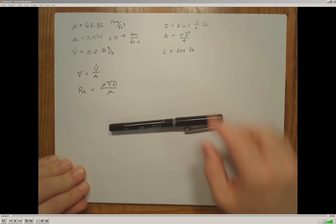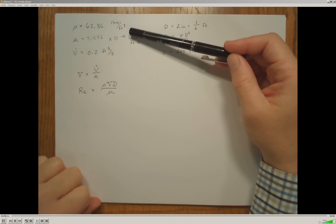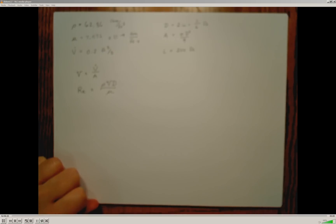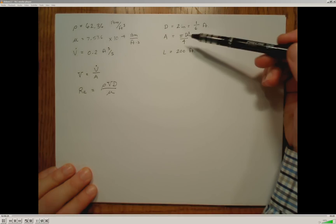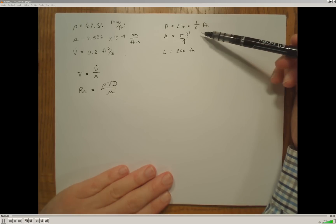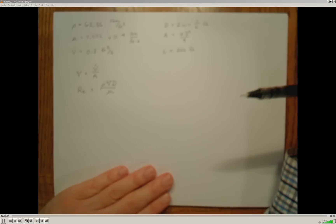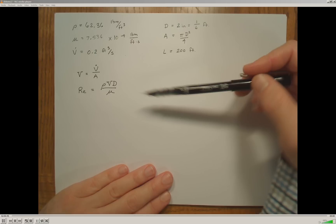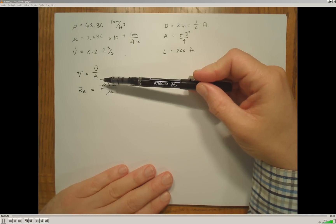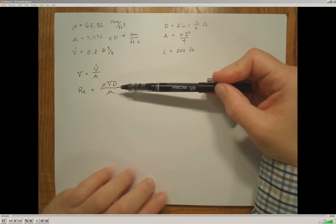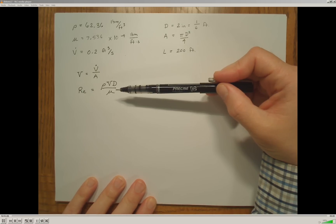To begin solving this problem, I'll write down all the information given: the density, the viscosity, and the volumetric flow rate. With this information, as well as the pipe diameter of 2 inches, I can calculate the cross-sectional area. Note that the diameter is expressed in feet for dimensional consistency with the English units system. From this, I can calculate the average velocity and the Reynolds number, which will tell me whether the flow is laminar or turbulent and help determine the friction coefficient.